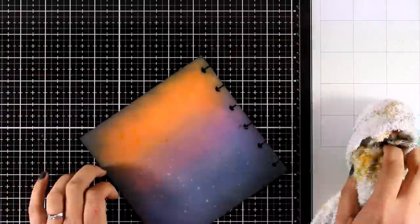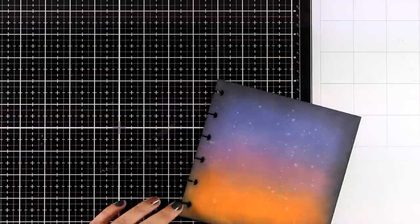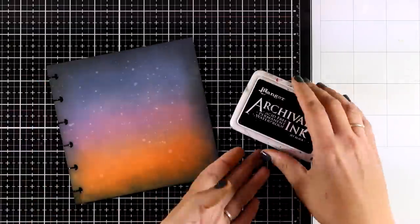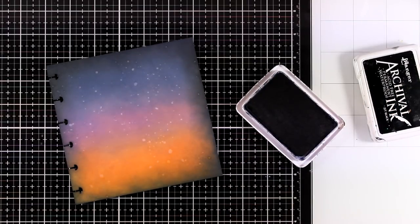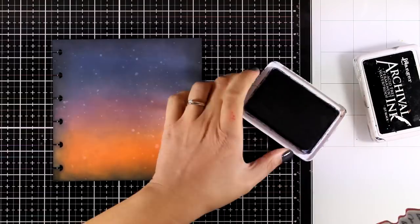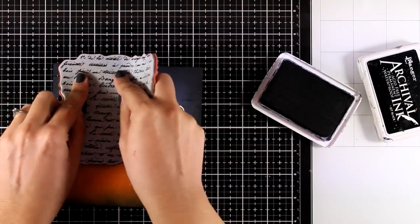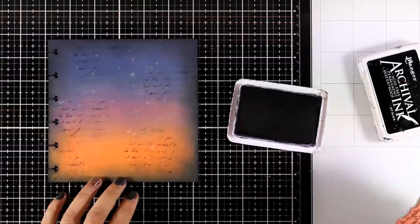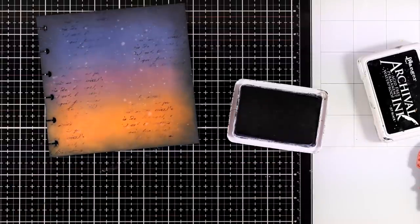I have some techniques for my backgrounds that I go back to again and again. I absolutely love them and one of them is to stamp some text at the background which is exactly what I'm going to do. I'm using black archival ink here and notice that I don't try to get a perfect impression, this is just the background so I'm happy with how it looks.